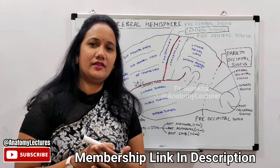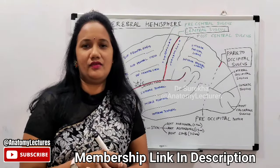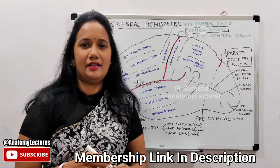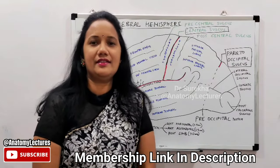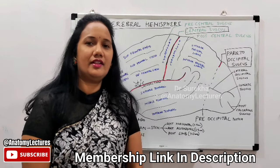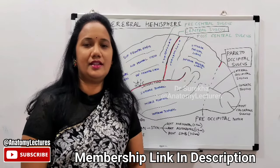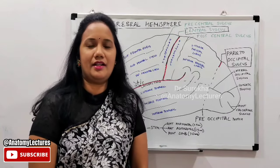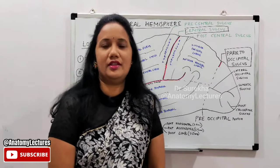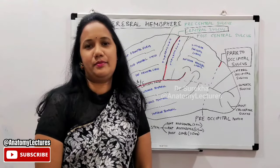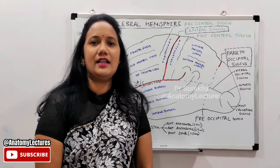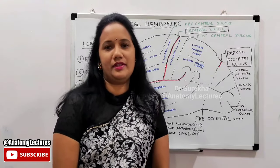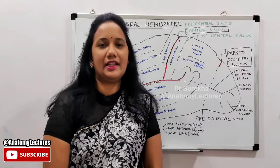Because of the presence of these convolutions, the brain in man is referred to as gyrencephalic. In contrast, in lower mammals, reptiles, and birds, the cerebral hemisphere is smooth and not convoluted — that kind of cerebral hemisphere is referred to as lissencephalic. In man it is gyrencephalic because of the presence of the different gyri.